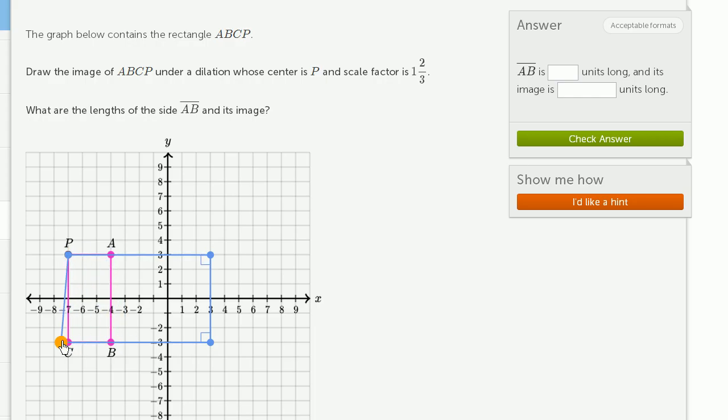Now, point C is going to be 1 and 2/3 times as far as it is right now. So let's see, right now it is 6 away. Its x-coordinate is the same, but in the y direction, P is at 3, C is at negative 3, so it's 6 less. We want to be 1 and 2/3 times as far away. So what's 1 and 2/3 of 6?